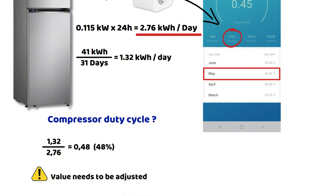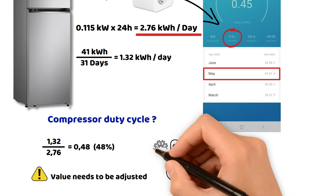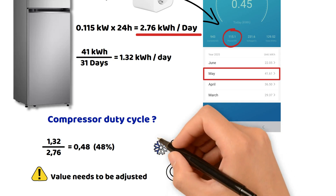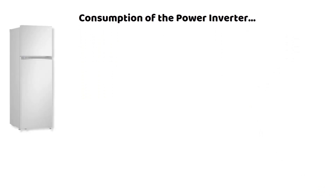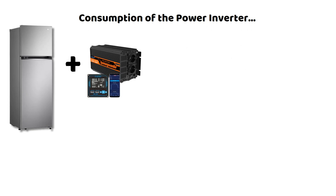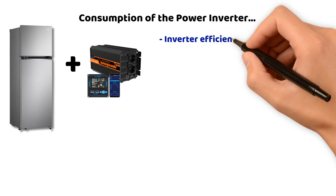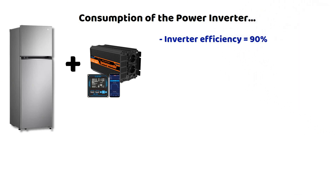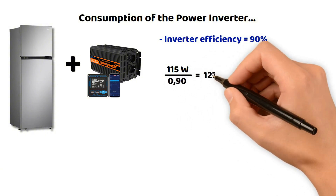In a camper van or an RV, during summer the ambient temperature is higher, and in winter the consumption will be much lower in comparison. Now let's talk about the power inverter, because it has a standby consumption that is not negligible — but there is a trick to reduce this impact — and also a loss during conversion, since an inverter has an efficiency of about 90% on average. Let's first calculate the total consumption including the fridge and the inverter: we divide our 115 watts by 0.90, which gives us 127.8 watts.